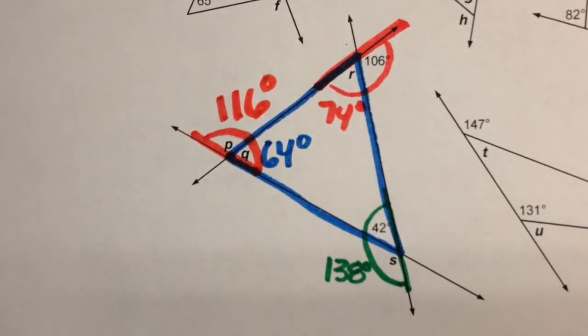So we're using all the angle relationships that we've learned so far and figuring out one angle at a time as we go through the diagram. Thank you.